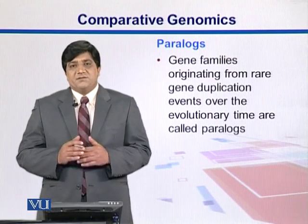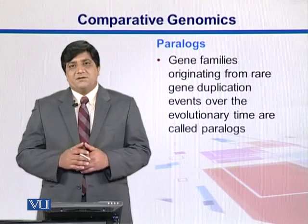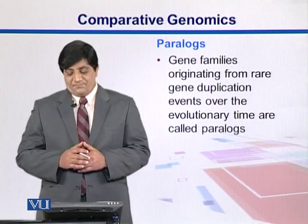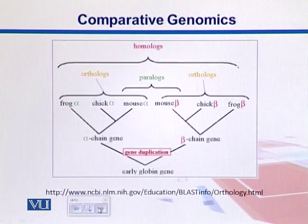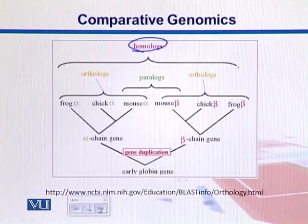Paralogues may be within the same organism. In this diagram, we see that similar genes are called homologues, and within homologues we can have groups like orthologues and paralogues.